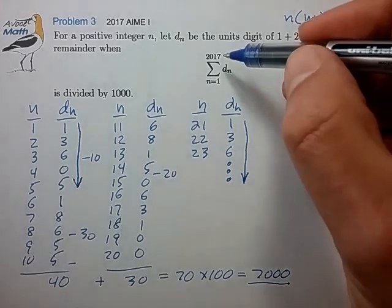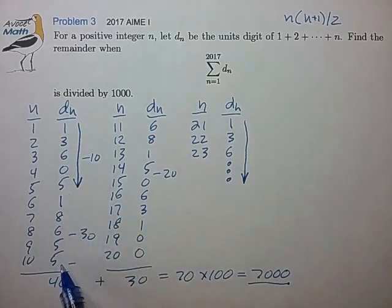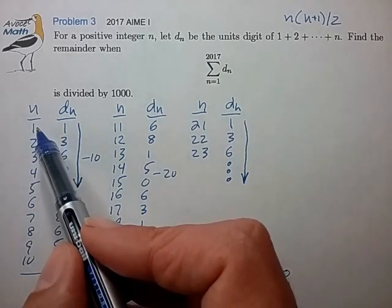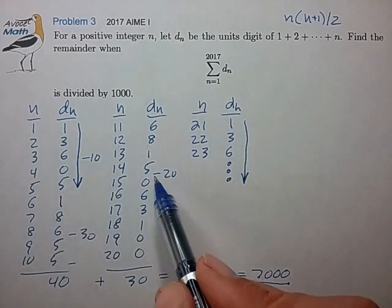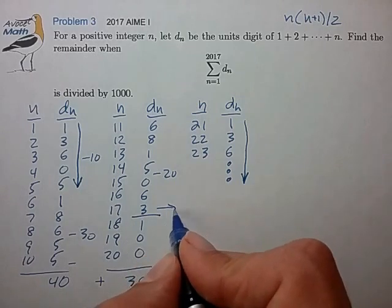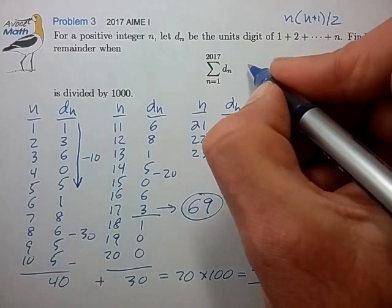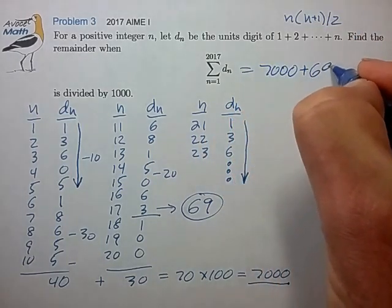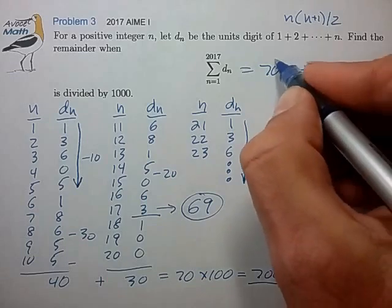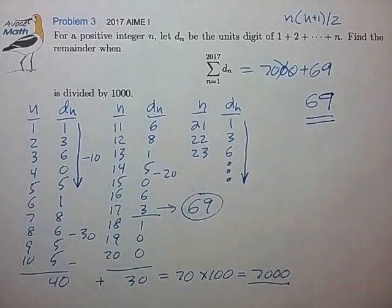So now we just have to calculate the remainder block from 1 through 17. And then again, that just follows the repeating pattern that we identified. So let's count up the sum 1 through 17. So here again, that's 40 plus 20 plus 9. So this sums out to 69. And that tells us that this sum is equal to 7000 plus 69. Dividing by 1000, this doesn't really matter. And that leaves us with a final answer of 69.